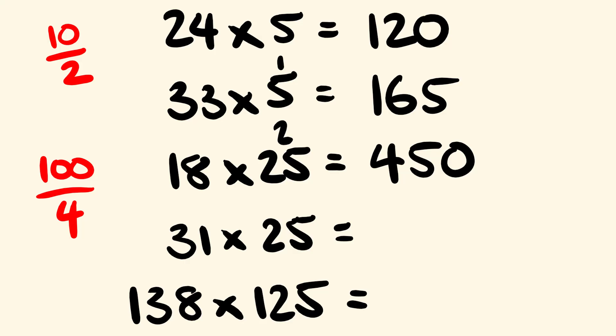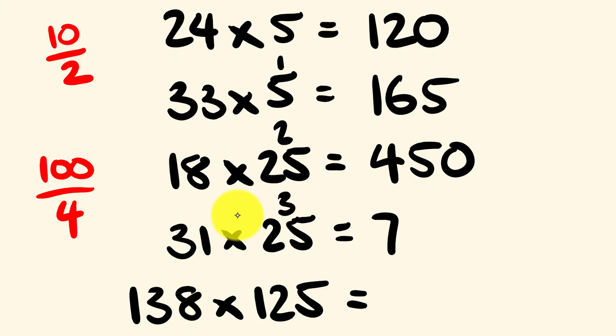31 multiplied by 25. How many times does 4 go into 31? 7 times, since 7 times 4 is 28, and there's 3 remainder. 3 times 25 is 75. Our answer is 775.